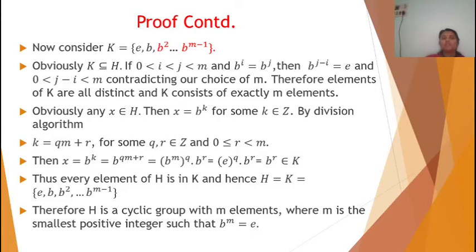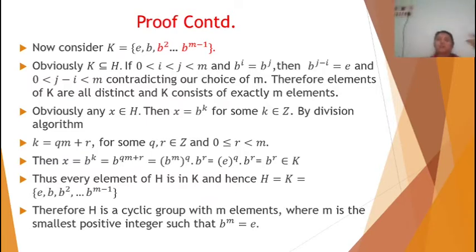Let K = {e, b, b², ..., b^(m−1)}. Clearly K is contained in H. Suppose 0 ≤ i < j < m and b raised to i equals b raised to j; then b raised to (j−i) equals e. But j−i is less than m, contradicting our choice of m as the smallest such positive integer. Therefore all elements of K are distinct, and K consists of exactly m elements.